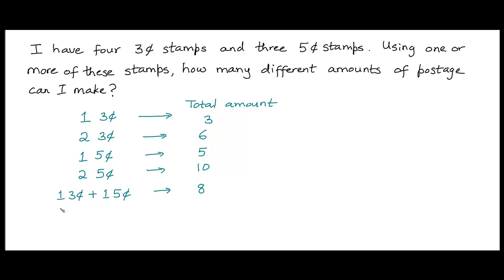Or maybe I could use two three-cent stamps and one five-cent stamp. The total amount of postage would be two times three, which is six, plus five — eleven cents.